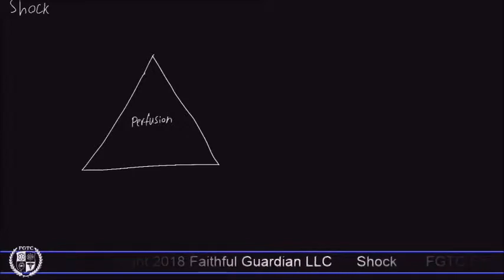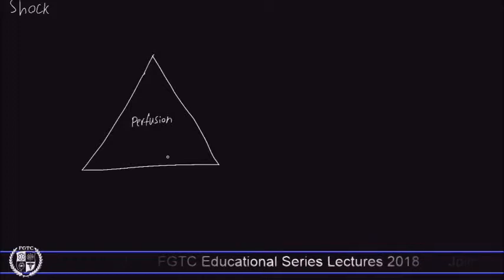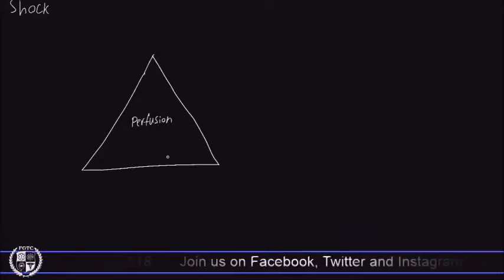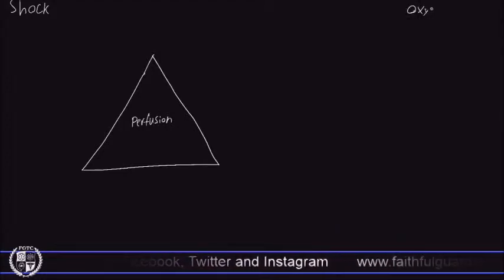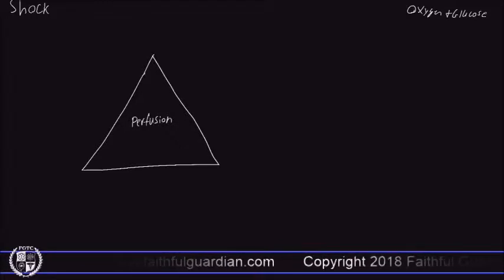Shock is also going to be known as hypoperfusion. Perfusion is defined as the delivery of oxygen and nutrients and the removal of waste products from the cells and tissues. We need to make sure our cells and tissues are getting adequate amounts of oxygen and nutrients and that we're removing waste products. The two big nutrients we need to worry about are oxygen and glucose.